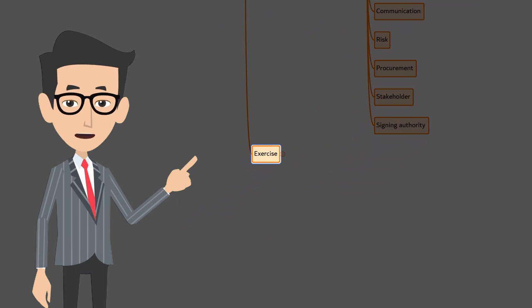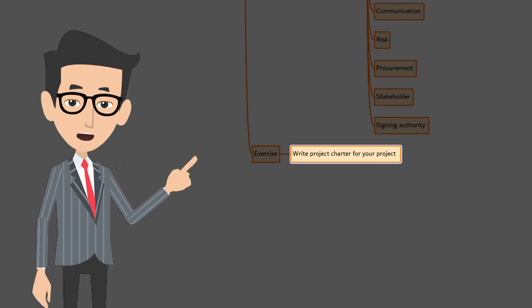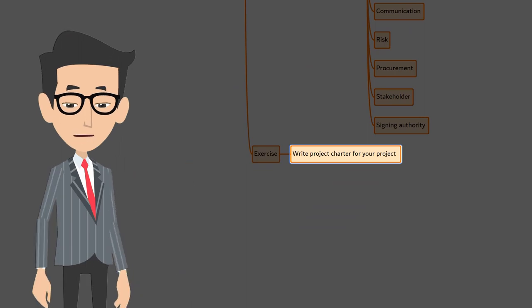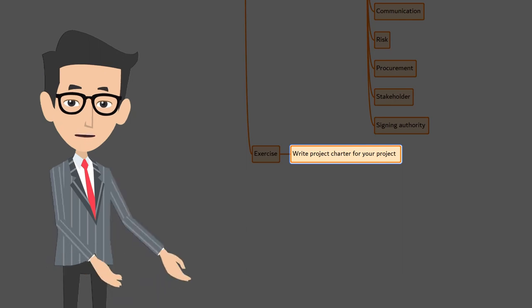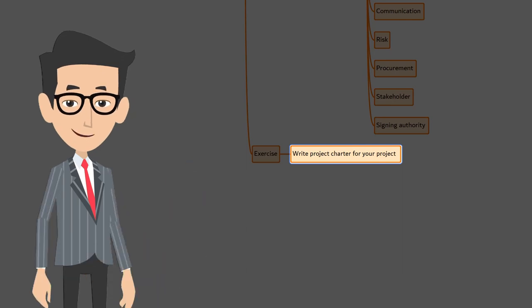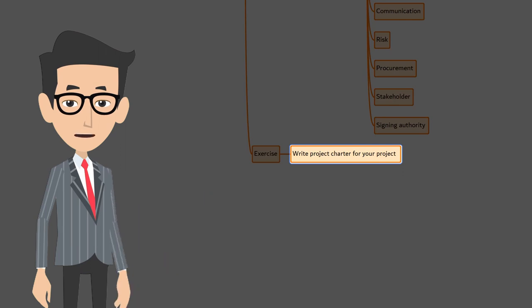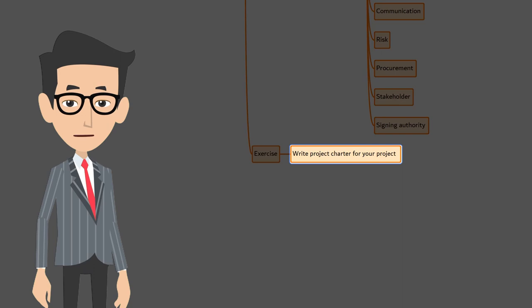I hope by now you have a good understanding about the project charter and its elements. Now an exercise for you: take a piece of paper and write down the elements of a project charter for one of your recently completed or ongoing projects. Don't skip this exercise — it is very important for you to understand, remember, and recollect the content of the project charter. You need a good understanding about the project charter because its content at various levels will be discussed throughout the PMBOK guide. Also, in the sample examination you can expect multiple twisted questions about project charter and its content, so be ready.